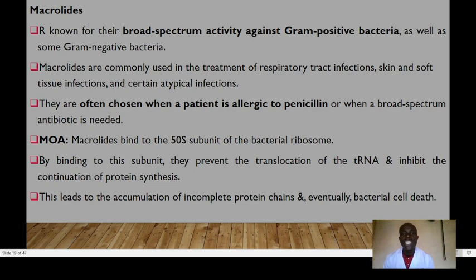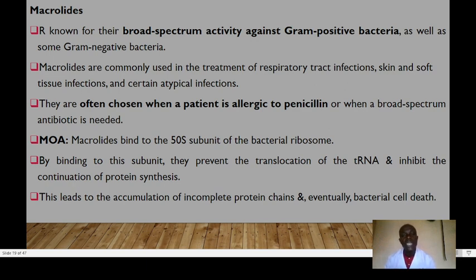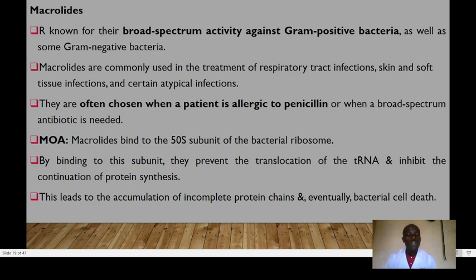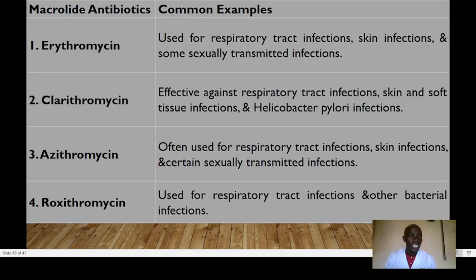Macrolides are the fourth group — broad-spectrum antibiotics with activity against gram-positive bacteria and some gram-negative bacteria. They are used in treatment of respiratory infections, skin and soft tissue infections, and are often chosen when a patient is allergic to penicillin. They work by binding to the 50S subunit of the bacterial ribosome, preventing translocation of transfer RNA and inhibiting continuation of protein synthesis. This leads to accumulation of incomplete proteins and eventually bacterial cell death. Examples include erythromycin, clarithromycin, azithromycin, and roxithromycin.